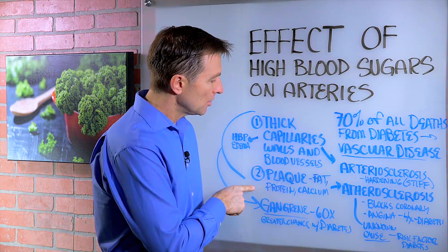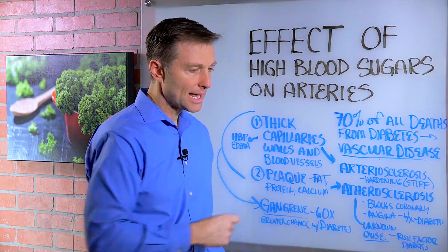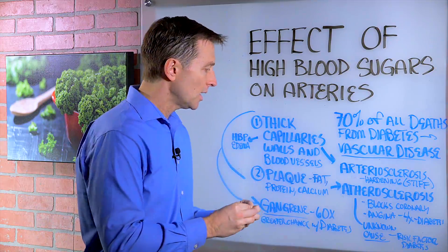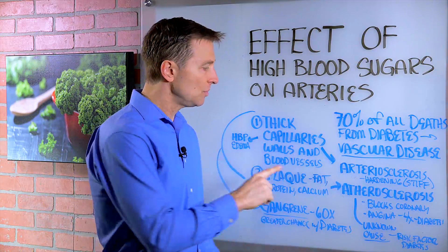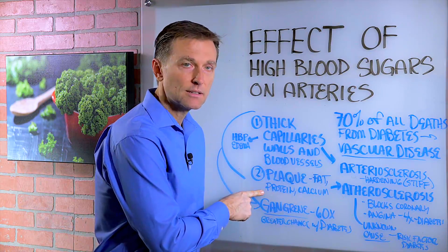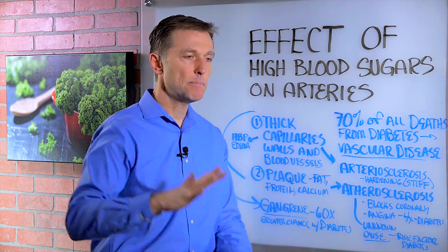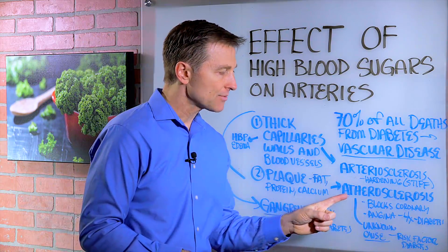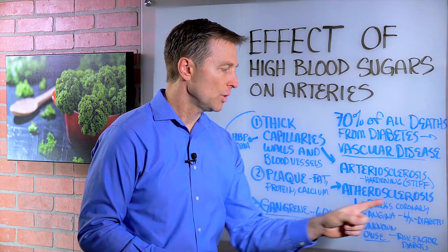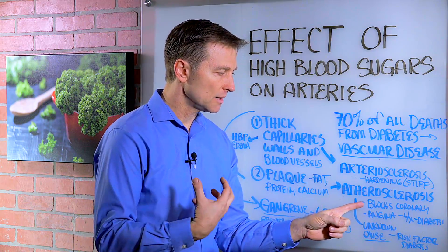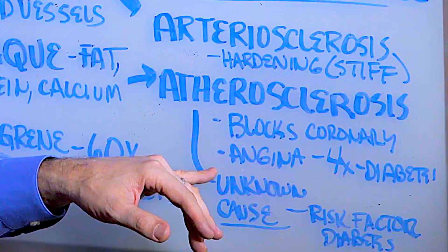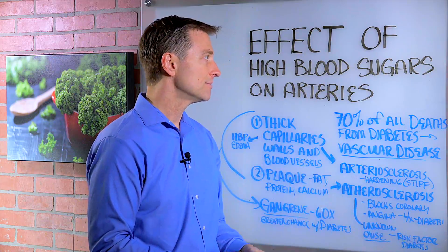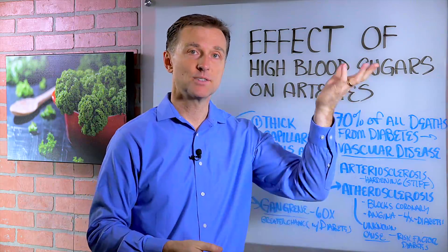Number two, you're also going to have plaquing. Plaquing is the end result of damage within the arteries, where the body starts accumulating cholesterol deposits, protein, and calcium as a band-aid to heal the area. But it forms a plaque, and that is called atherosclerosis, which blocks the coronary artery of the heart. It's going to cause chest pain — it's called angina. Diabetics are four times more likely to develop this simply because of high blood sugars, and that's what a diabetic has.